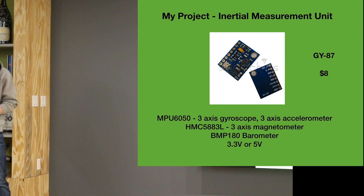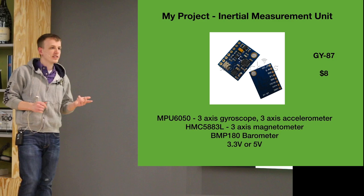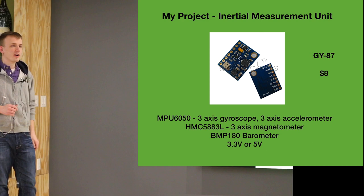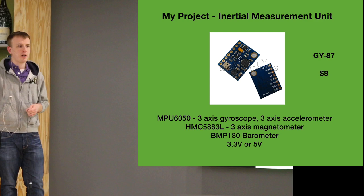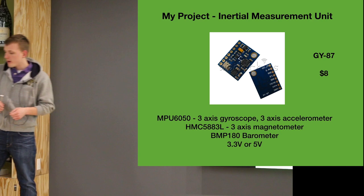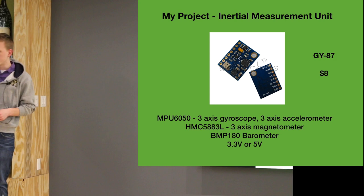The other thing I needed was an inertial measurement unit. This is the one I picked up off eBay. It has a three-axis gyroscope, a three-axis accelerometer, a magnetometer used to measure compass heading, and a barometer to measure altitude. I'm going to discuss the gyroscope and accelerometer in detail. I haven't incorporated the magnetometer or the barometer into my project yet.